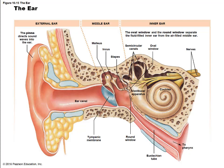The eustachian tube is relevant here: inflammation or too much fluid buildup in this area can dampen the quality of the sound and make it more difficult to hear. Once the oval window begins to vibrate, the sound has been conducted through the ossicular chain.